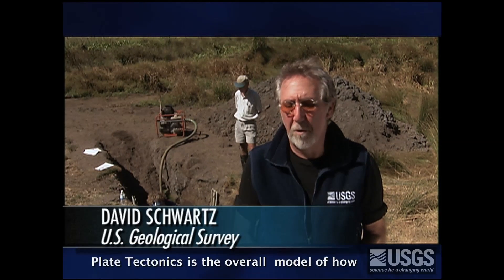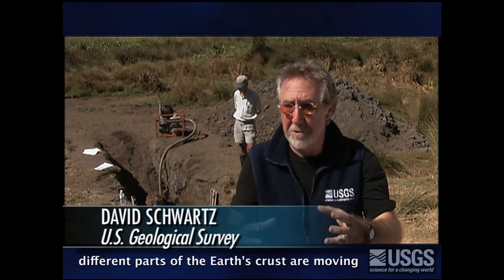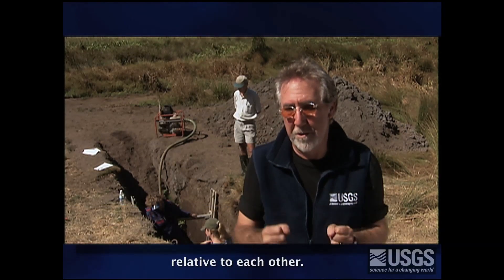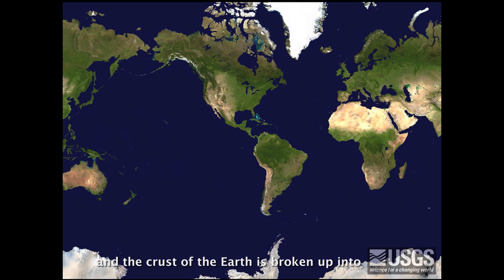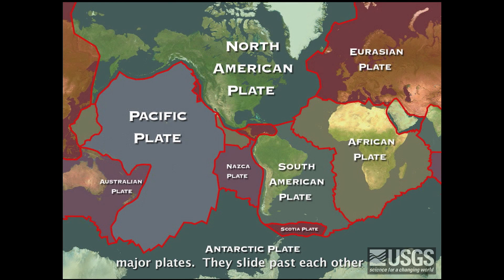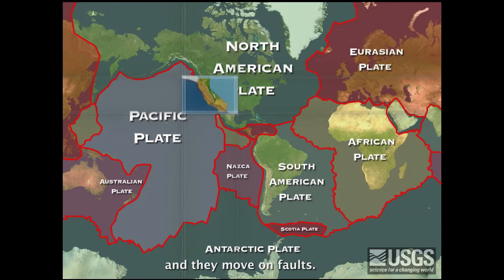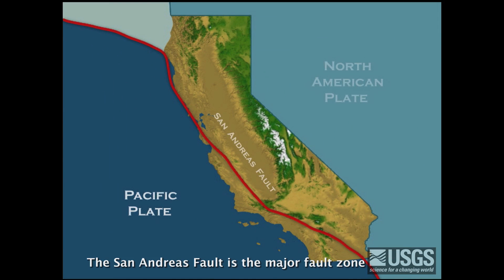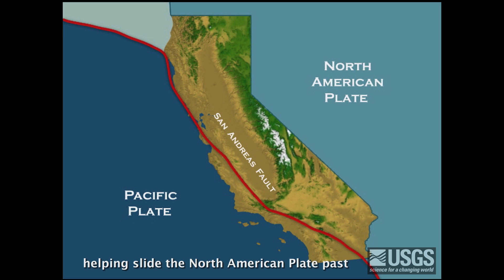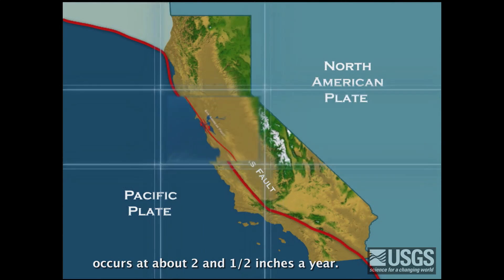Plate tectonics is the overall model of how different parts of the Earth's crust are moving relative to each other. The crust of the Earth is broken up into major plates — they slide past each other and move on faults. The San Andreas Fault is the major fault zone helping slide the North American Plate past the Pacific Plate, and this movement occurs at about two and a half inches a year.